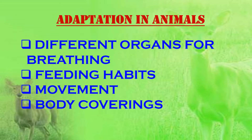Animals can be big, small or microscopic. They are found everywhere on the earth and can be found in very hot or very cold regions. Different animals have different adaptations — they have different organs for breathing, different feeding habits, different body movements, and their body coverings also give an advantage to survive in the given environment.